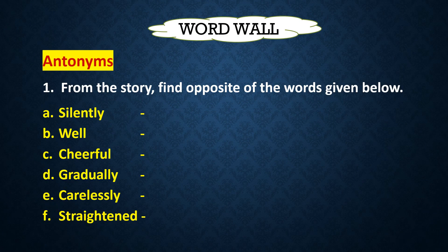Let's start the exercises. Our first exercise is Word Wall — Antonyms. You know what antonyms are? Antonyms are the words with opposite meanings. So from the story, find the opposites of the words given below. You have to find out the opposites of these words from the story only — the words which are opposite and which are being used in the story.